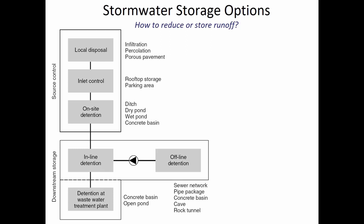This is a nice figure from your text that broadly summarizes the two main categories of preventing excess rainwater from reaching an outlet. Source control is where you're trying to deal with the water close to the origin — where the raindrop hit the ground — upstream of a point of concentration. Local disposal is preferred because it reduces the runoff volume by decreasing the C value of the surface.